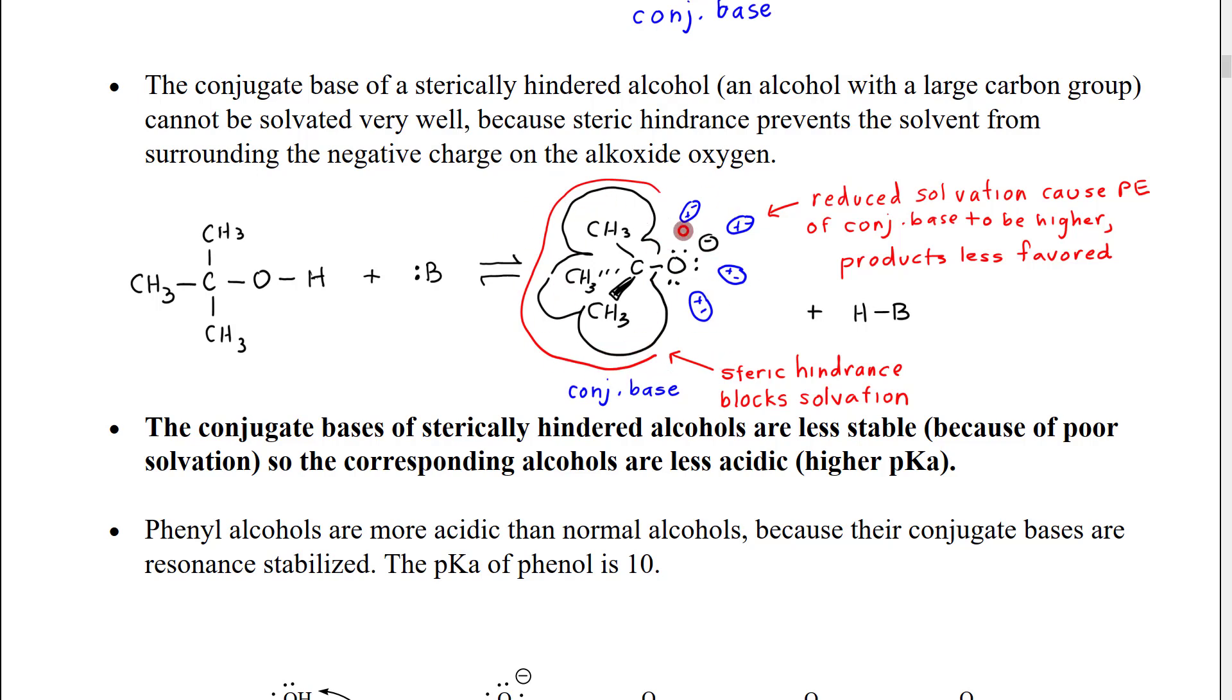So when we make the alkoxide now, these methyl groups are really hanging over that alkoxide negative oxygen. That's going to block a lot of the solvent molecules from being able to come in and have an attractive interaction with that negative charge. So, steric hindrance blocks solvation to some extent.